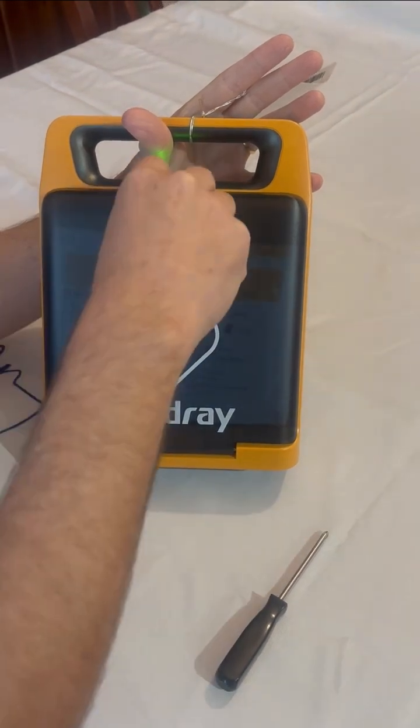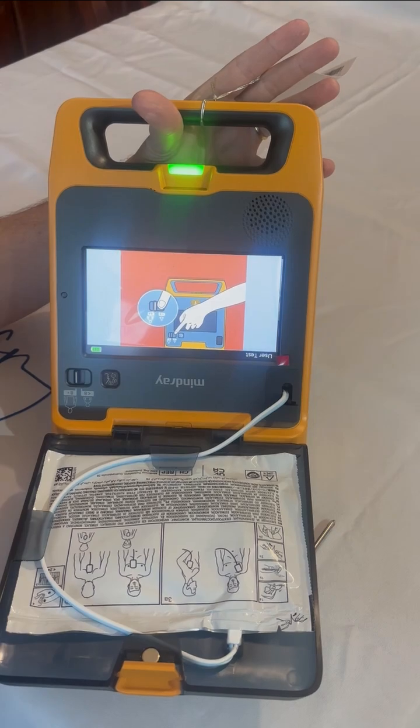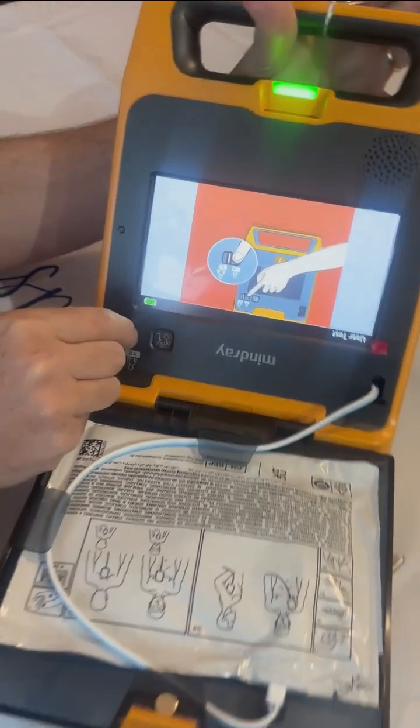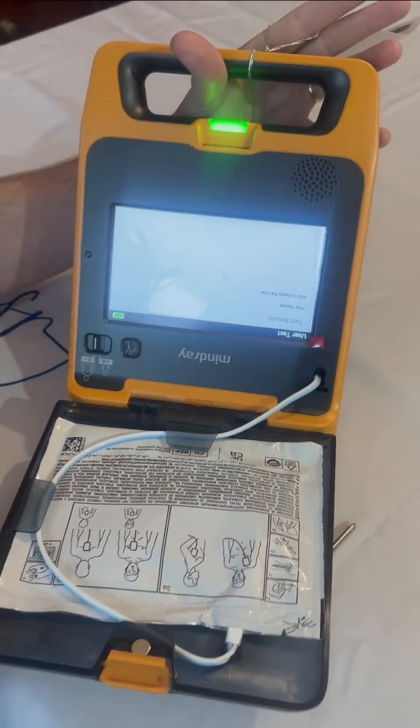Please open the lid and perform control test. Please adjust the adult-child mode switch. First, set to child mode, then back to adult mode. Please press the language button. Test completed. Device OK.